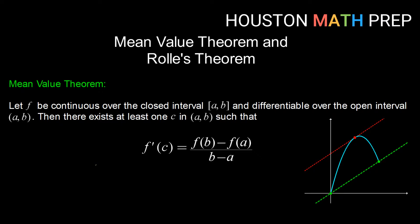The mean value theorem says: let f be continuous over the closed interval a, b, and differentiable over the open interval a to b. Then there exists at least one c in the interval a, b such that f prime of c equals f of b minus f of a over b minus a. Beginning with the conclusion, f prime of c is the slope of a tangent line at some c.